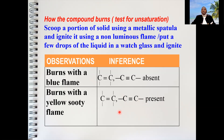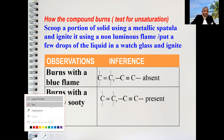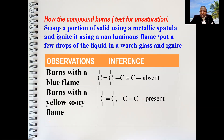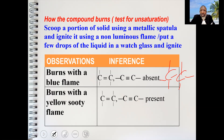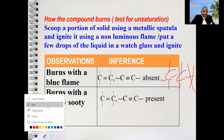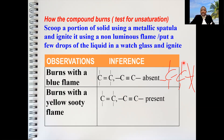Remember, in organic qualitative analysis we are testing for functional groups. Alkanes have no functional groups, so it is wrong to write 'single bond present' — we don't test for single bond. If it burns with a blue flame: double bond, triple bond absent. If it burns with a yellow sooty flame: double bond, triple bond present. It is wrong to write 'alkane present,' 'ROH present,' or 'alkanol present' as the inference here.